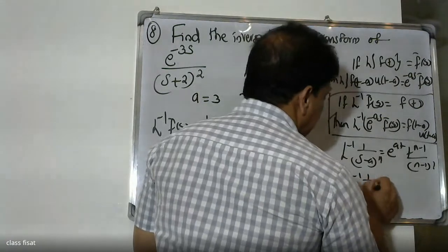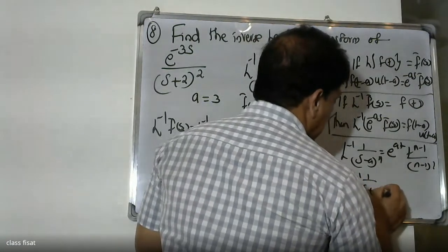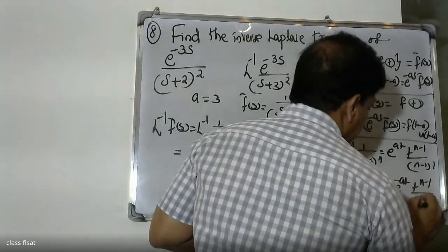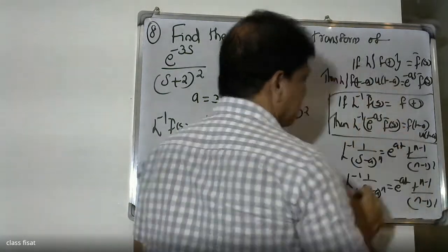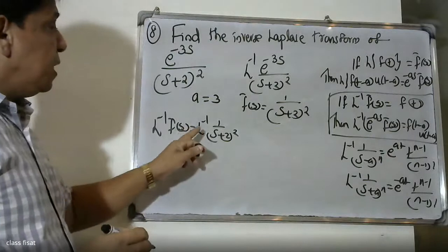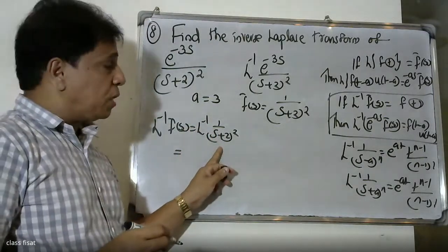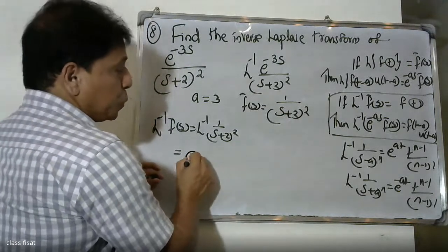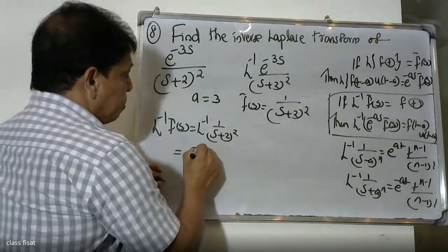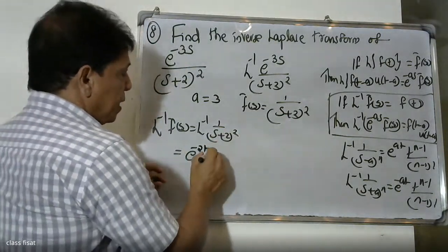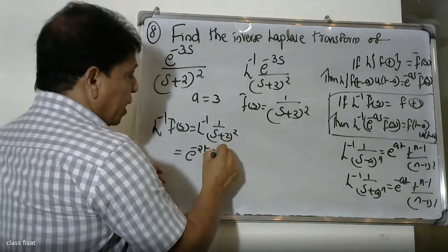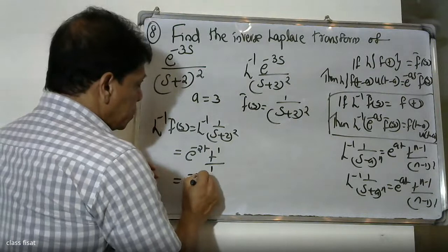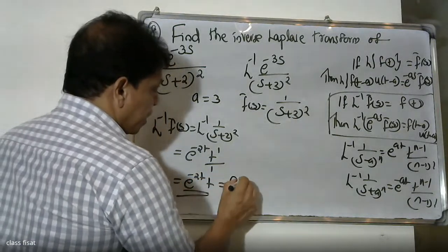Applying the formula: L inverse of 1 by (s plus 2) squared. Here A equals 2 and N equals 2, so we get e raised to minus 2t times t raised to 1 divided by 1. Therefore, L inverse of 1 by (s plus 2) squared equals e raised to minus 2t into t. This is F(t).